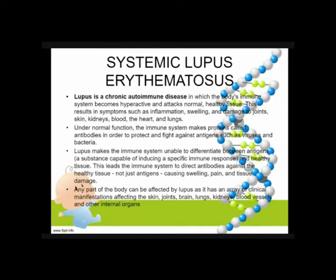Any part of the body can be affected by lupus as it has an array of clinical manifestations affecting the skin, joints, brain, lungs, kidney, blood vessels, and other internal organs. Our own body is attacking our own tissue — skin, joint, brain, lungs, kidney, and other major organs in the body.